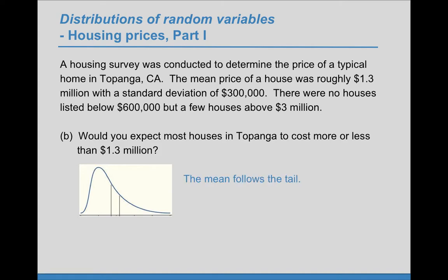We know that the mean follows the tail. And since we have a right tail here, a right skewed distribution, we have the mean is greater than the median.